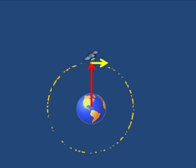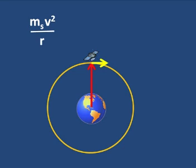So I can write mv squared over r. m is the mass of the satellite, v is the orbital speed, r is the distance between centers.